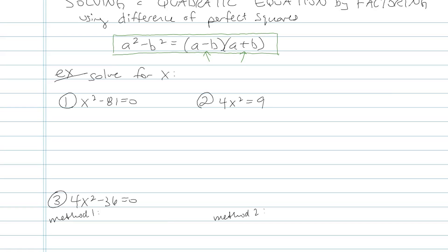So let's go ahead and try it. You want to figure out what are the things being squared. In problem number one, the first thing being squared is x, and the second thing being squared is 9. So my factored form is going to look like x minus 9 times x plus 9. Then because of the zero product property, I'm going to set each factor equal to 0 and then solve for x.